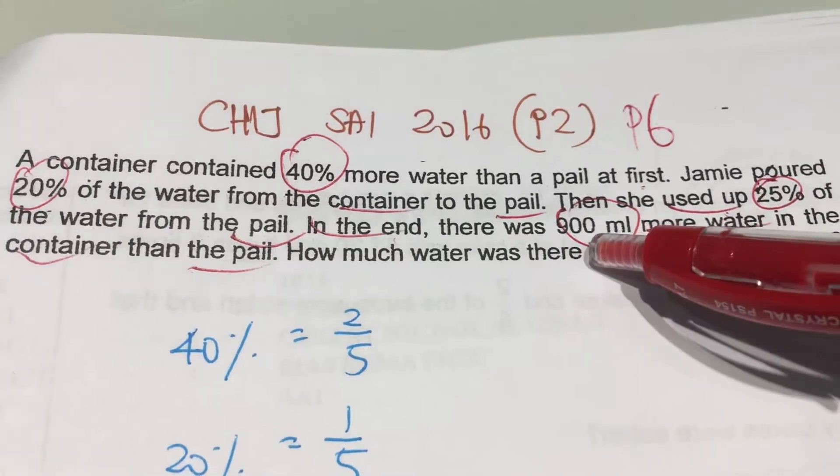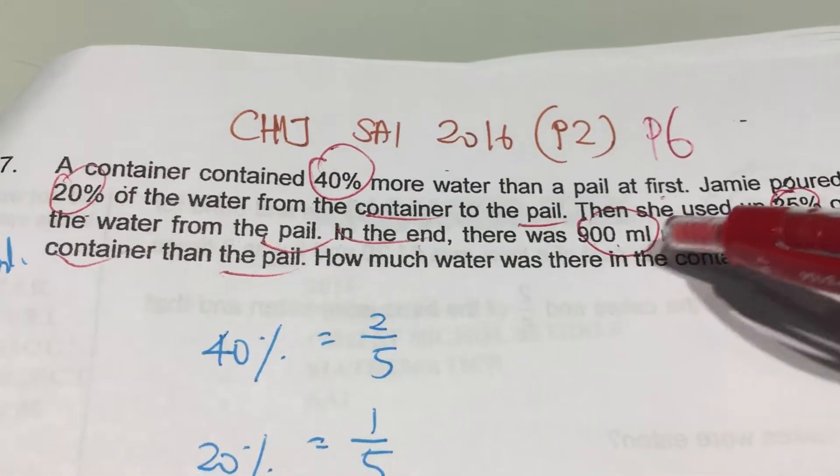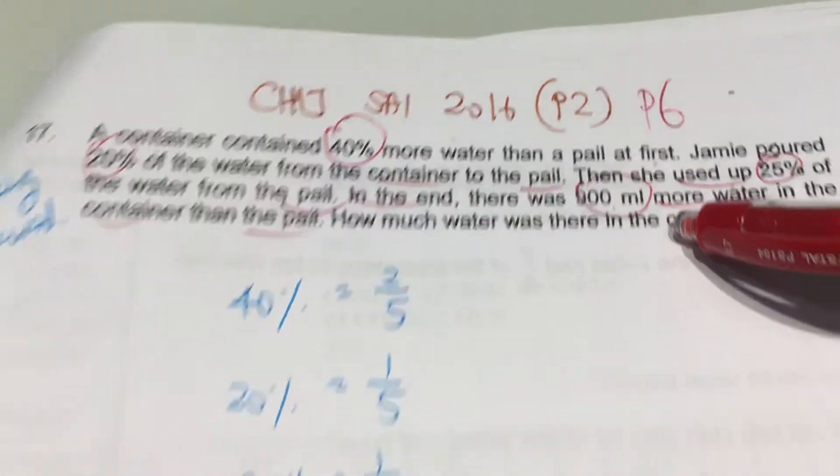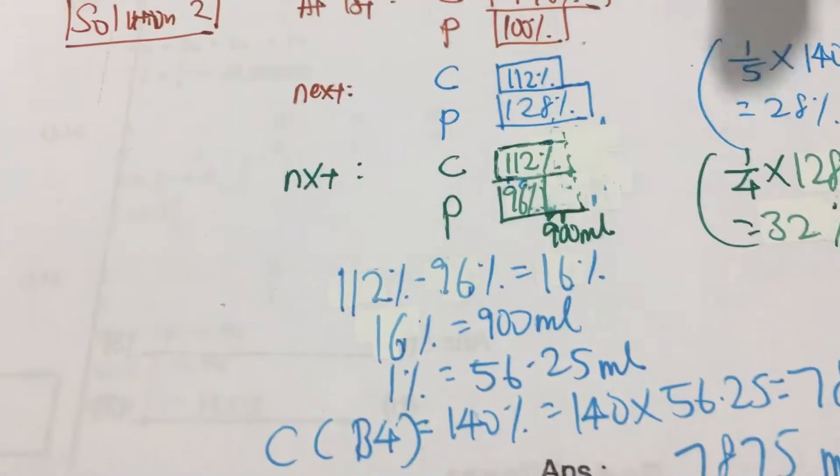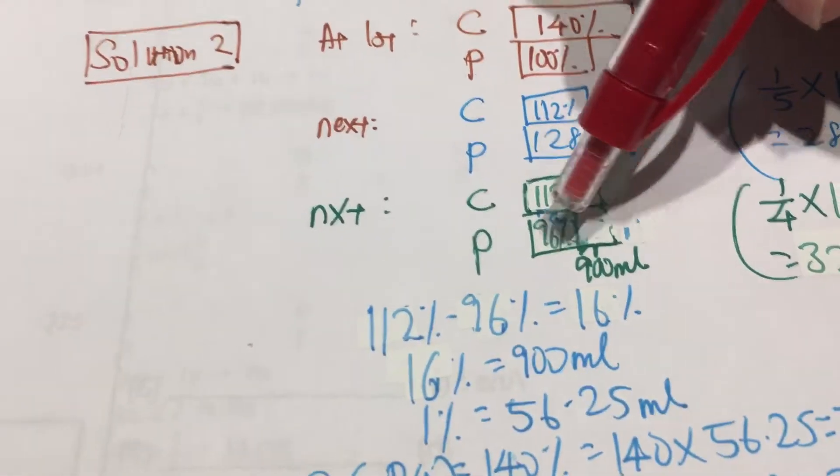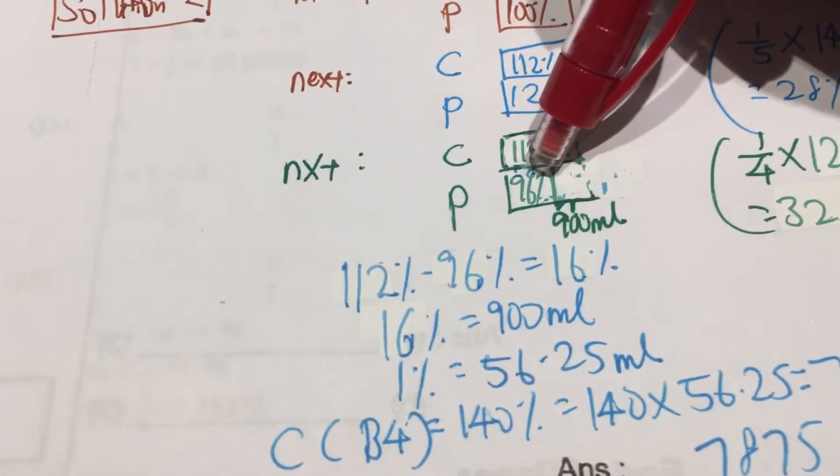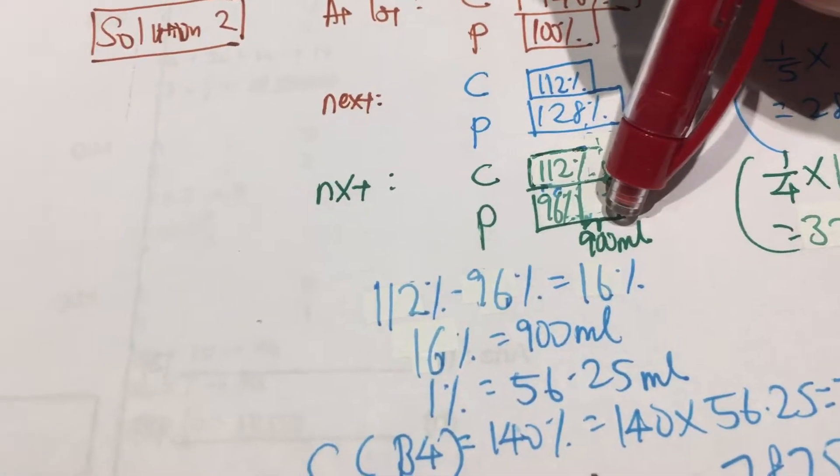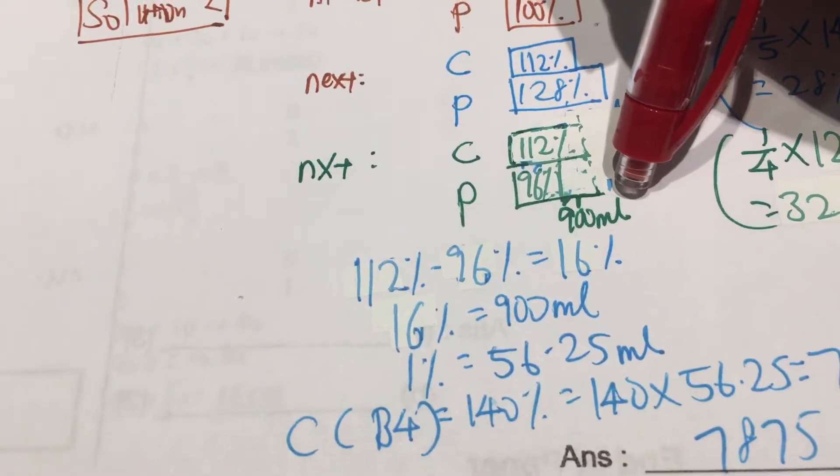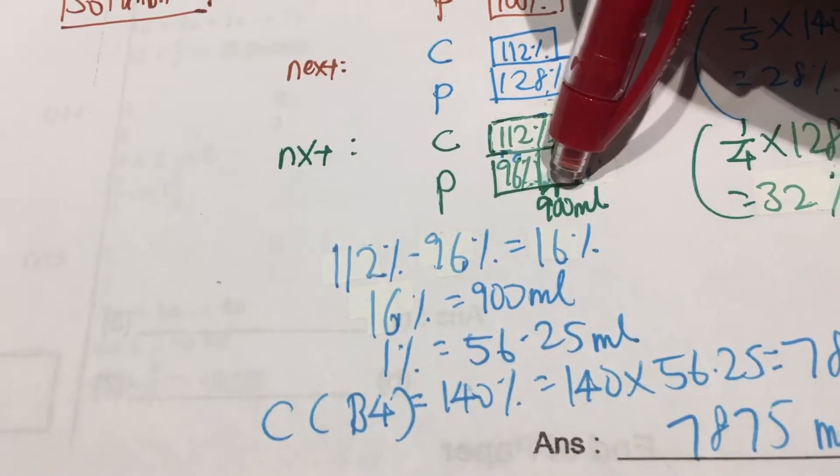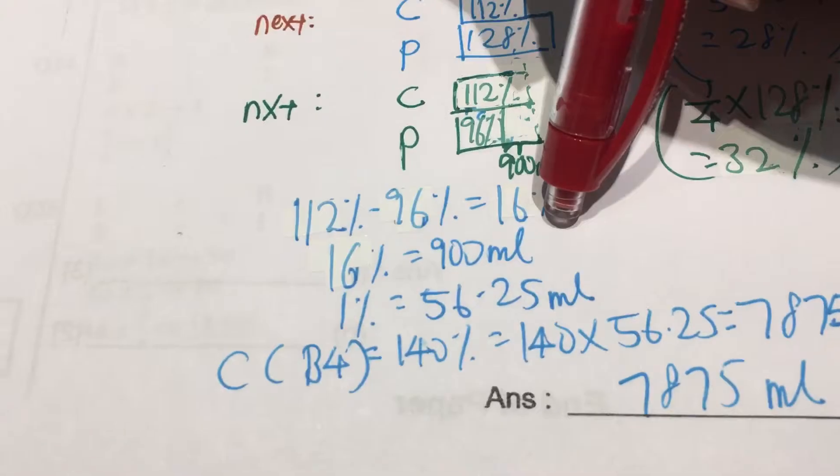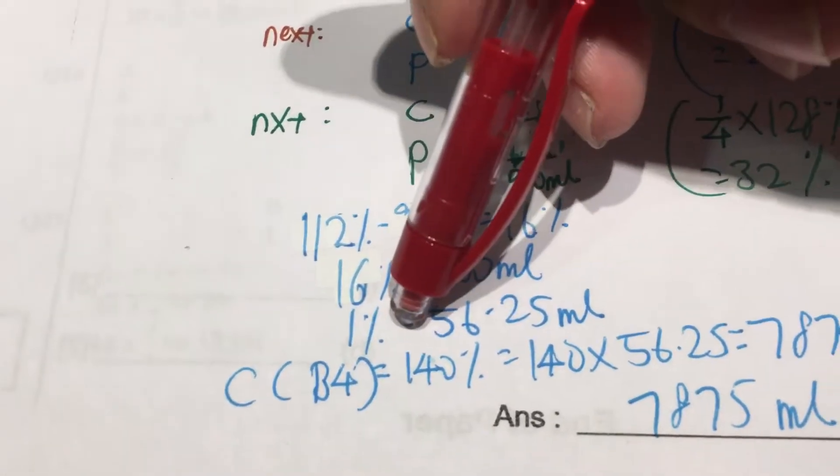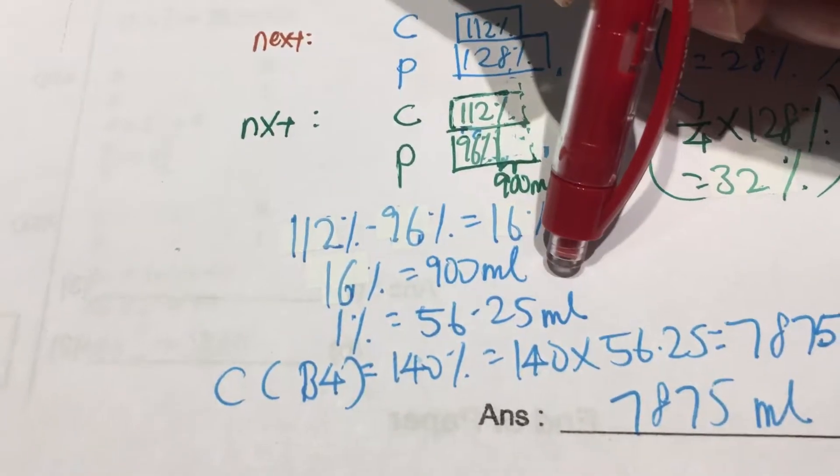So can you see that the difference is actually given, which is 900 ml? You need to take 112% minus 96%, which will give you 900 ml. And then I found out that the difference is actually 60%, which is equal to 900 ml. So I find 1%, which is 56.25 ml.